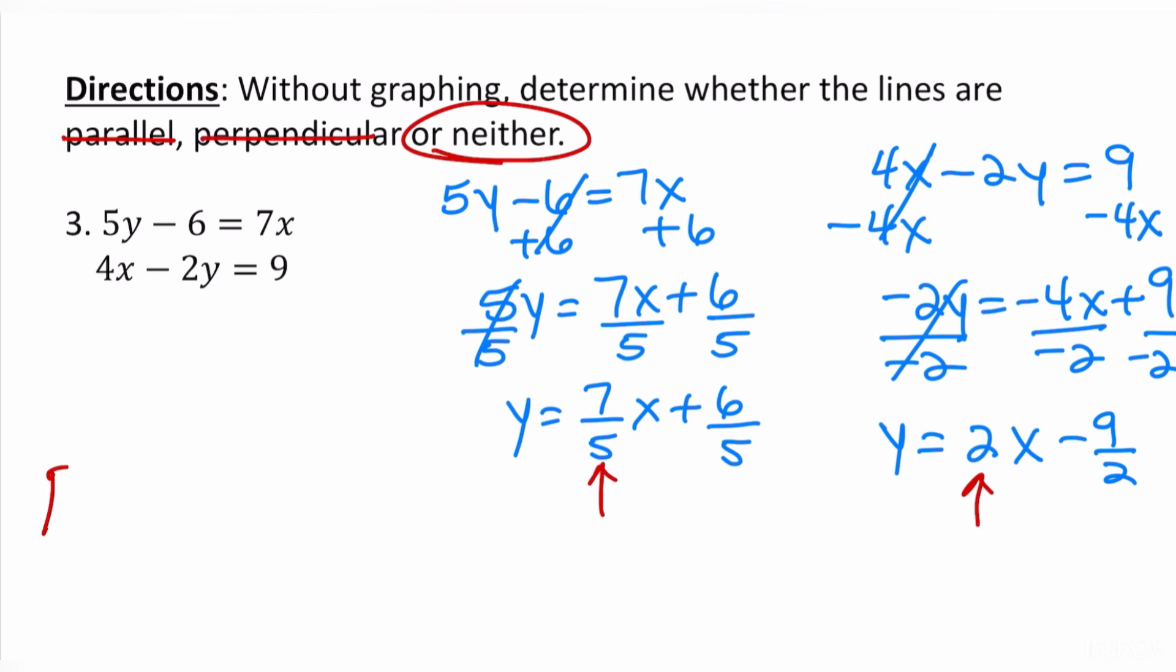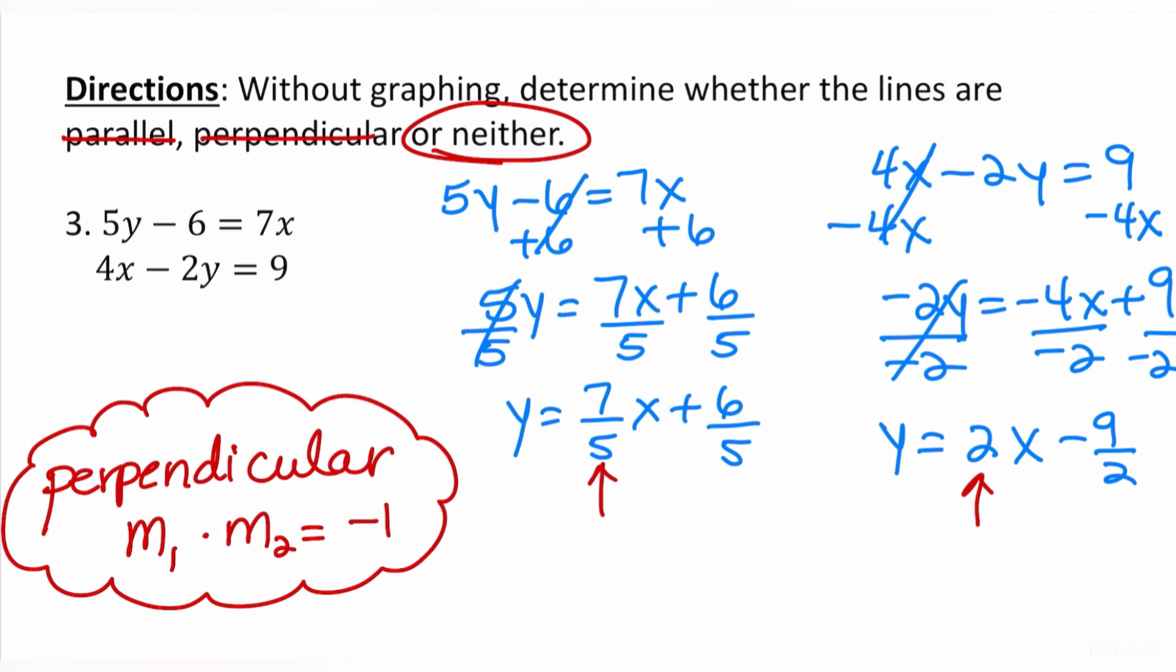Another thing we know about perpendicular lines when we talk about the two of them being negative reciprocals is that if I multiply the first slope times the second slope the answer has to give me negative 1. So that's another way that you can tell that in this particular case if I take 7 over 5 and I multiply it by 2 this is going to give me 14 over 5 which does not equal negative 1. So they are definitely not perpendicular.